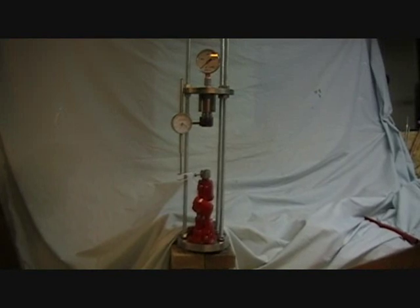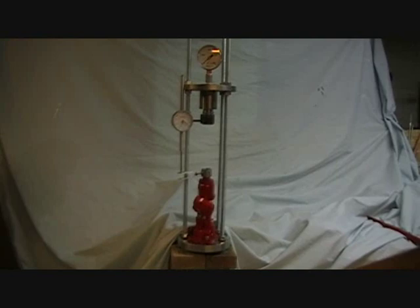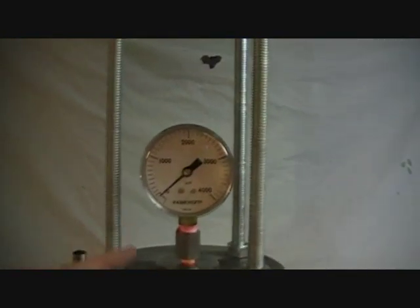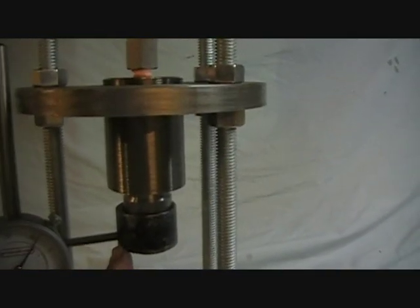Alright, here's our test setup. At the bottom, you can see that red bottle jack. It's a two-ton bottle jack. There's a pressure gauge up here at the top, which reads the pressure, the hydraulic pressure inside here.